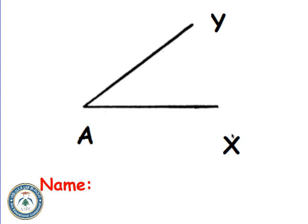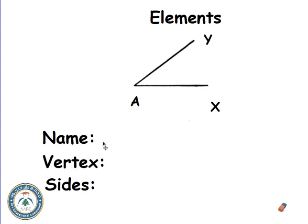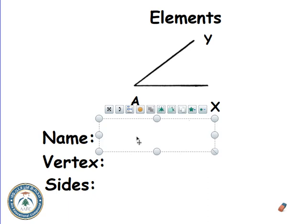To name an angle, you start by writing the edge X, then the vertex A, then the other edge Y. So the name is XAY, or you can say YAX — one of them is enough. You put a hat above the name; this is the symbol for angles.